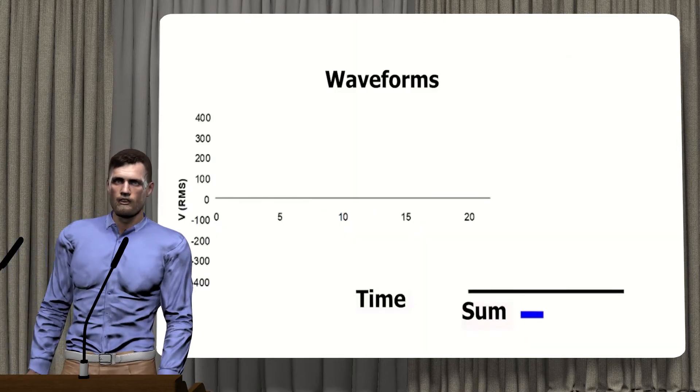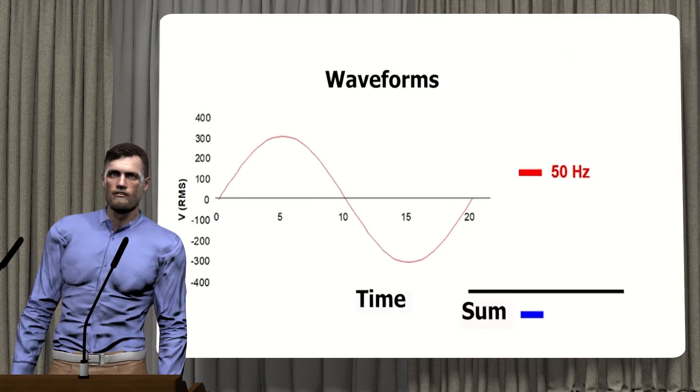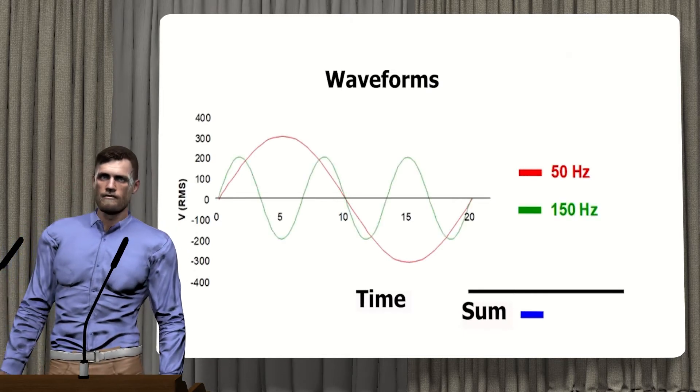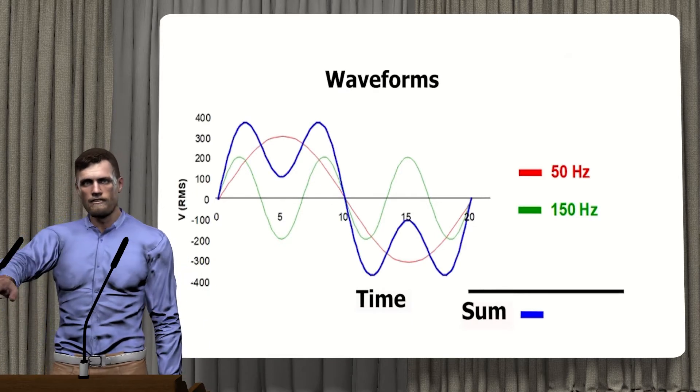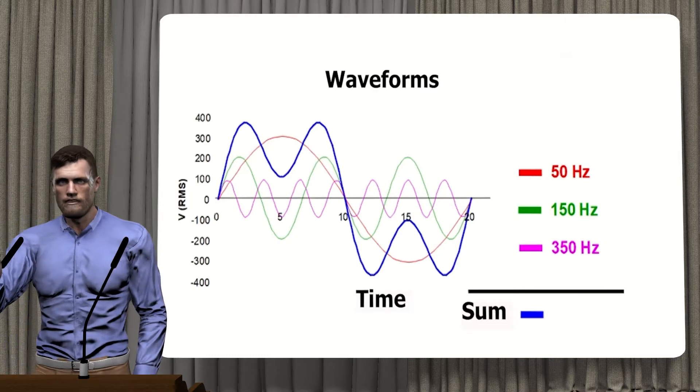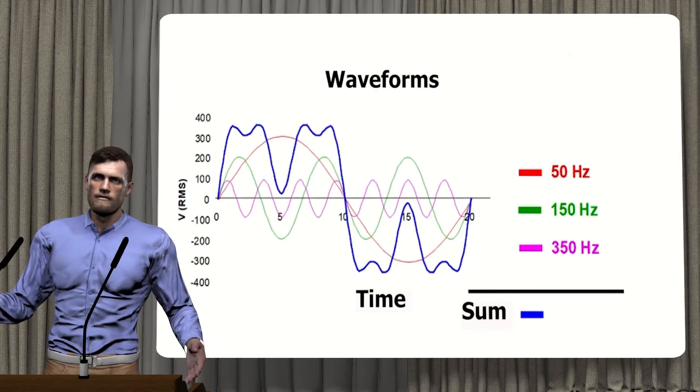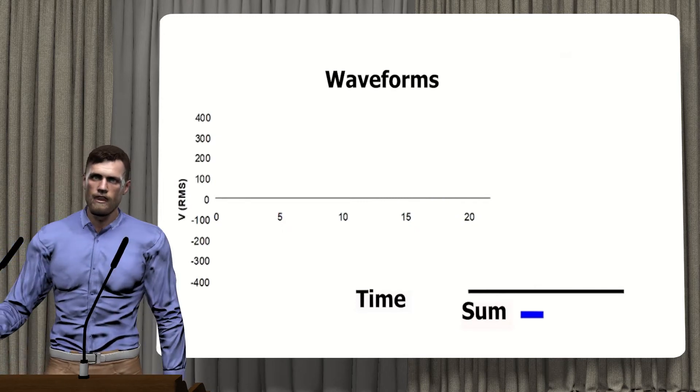In this other example, we can see in blue color the wave resulting from adding the fundamental component with a frequency of 50 Hz in red, with a harmonic of order 3 with a frequency of 150 Hz in green, and finally the harmonic of order 7 with a frequency of 350 Hz in pink. As we can see, the resulting wave does not have a sinusoidal shape.